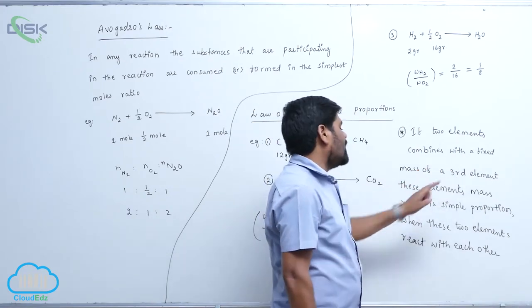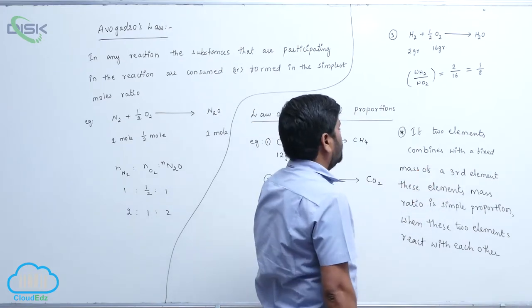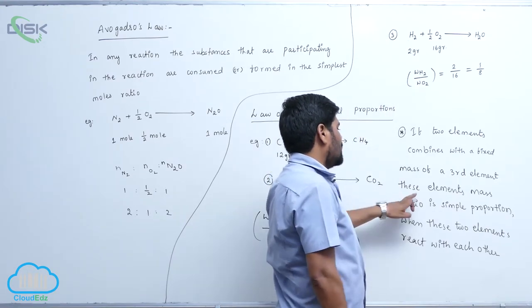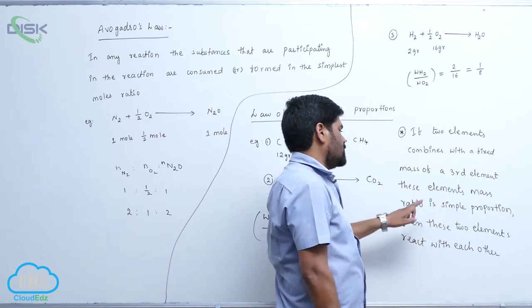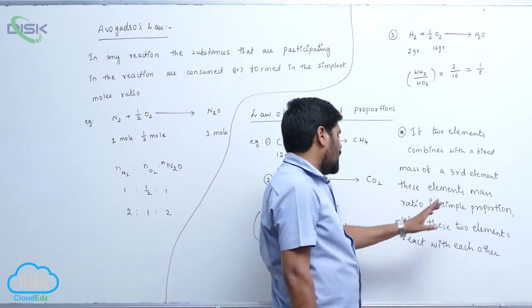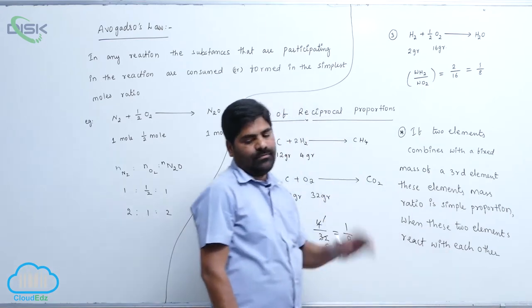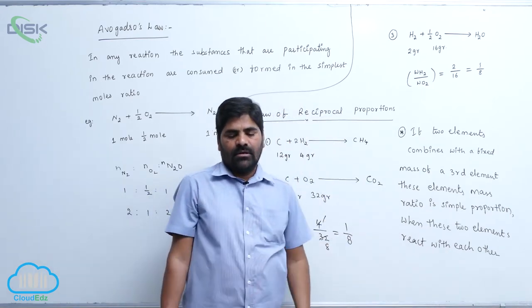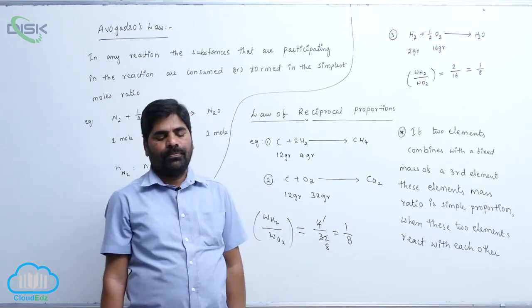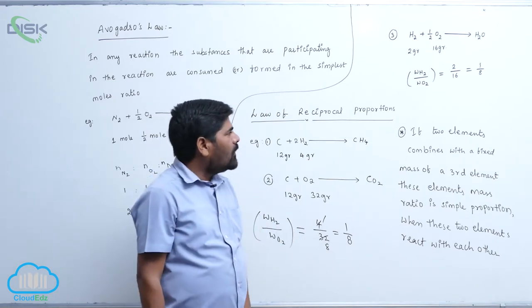a third element, which one third element? Third element. These elements mass ratios is simple proportions when these two elements are reacted with each other. When these elements are reacted to each other. Third element, for example...